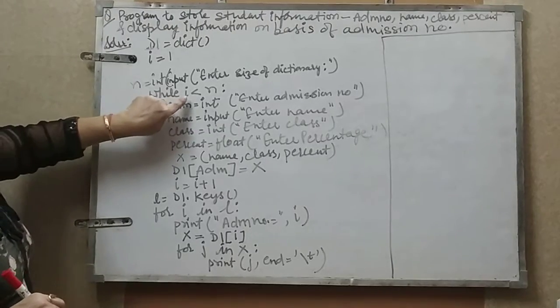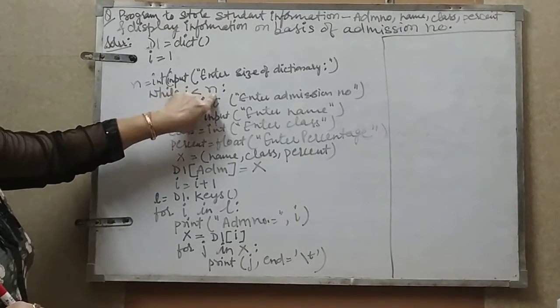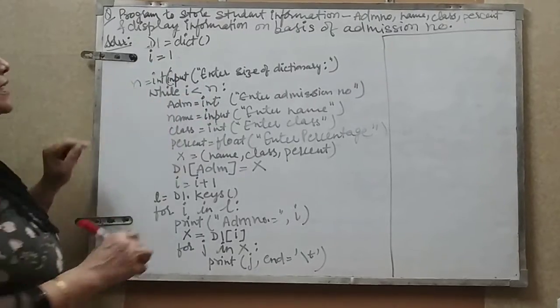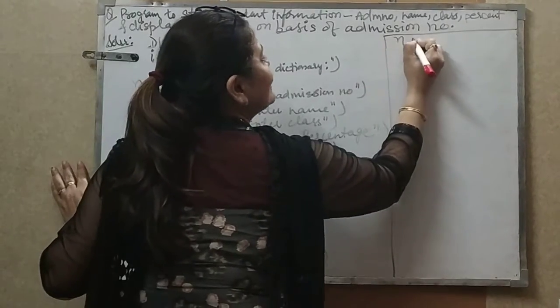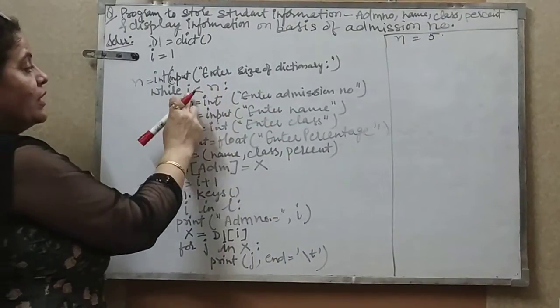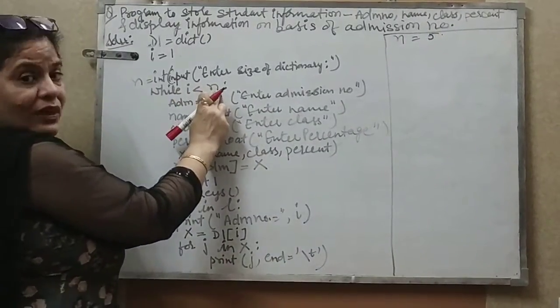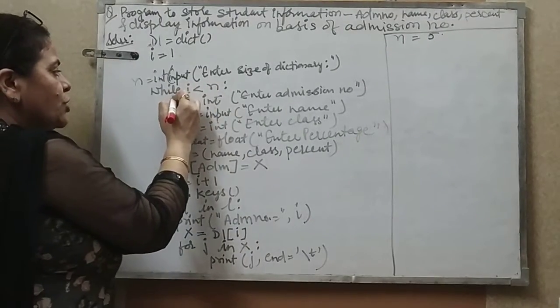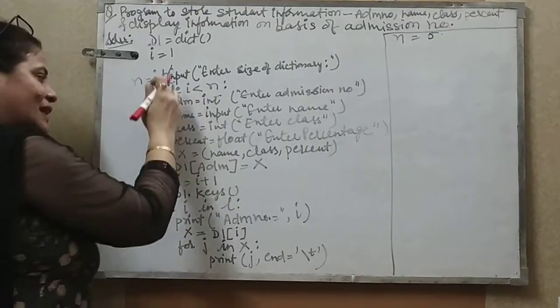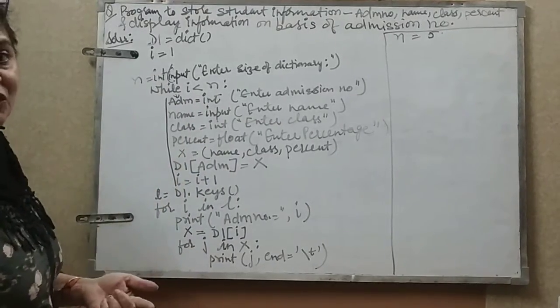Now the loop will continue from i less than N, where i stands for 1. So 1 is less than, suppose in N I have entered the value as 5, then it will take the value as 5. i is 1, N is 5, 1 is less than 5. If the condition is true, the loop will get down and all statements in the same alignment will get executed.